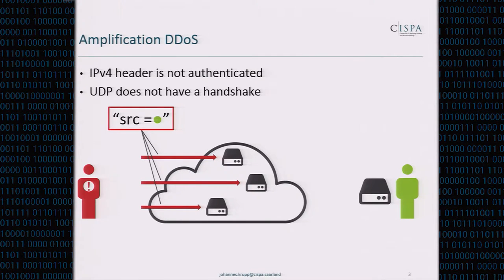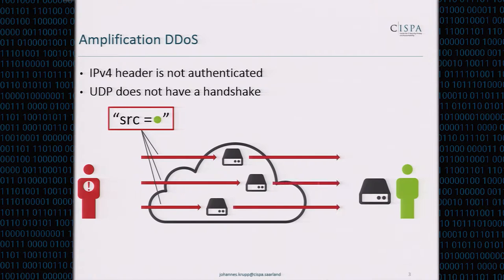The second flaw is that the UDP protocol does not have a handshake. In TCP, whenever you want to receive data, you ask the server, the server asks back whether you're okay with this, and finally you get the data. In UDP there is no such handshake — you ask for data, you get data — which means those reflectors will just happily send their responses to the victim.